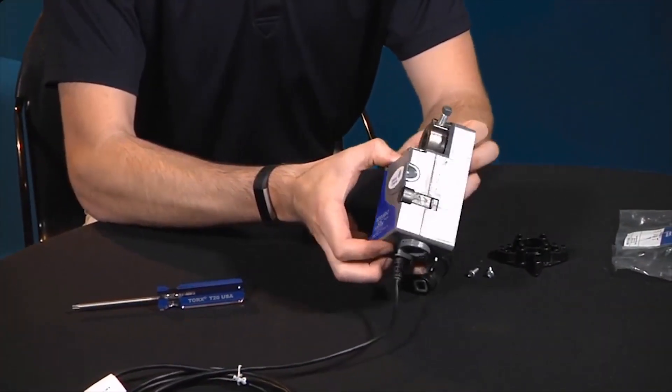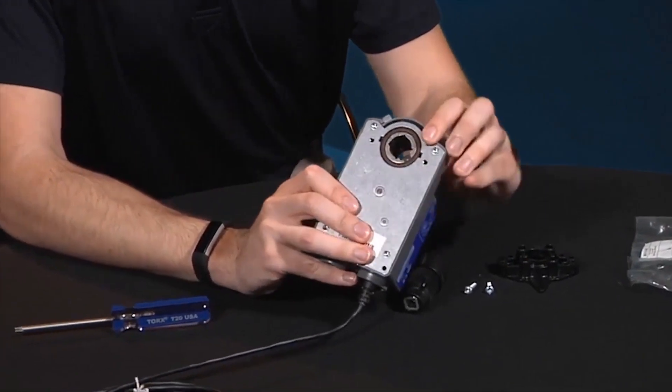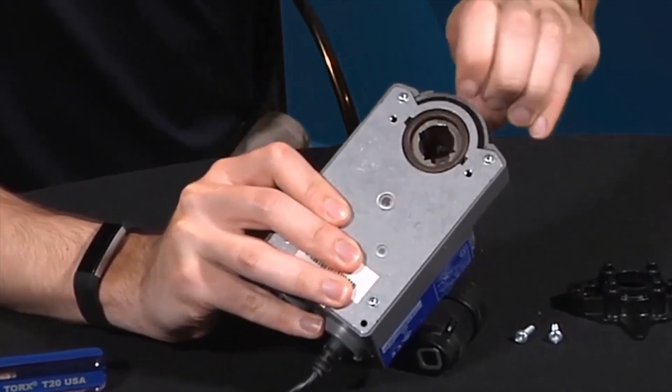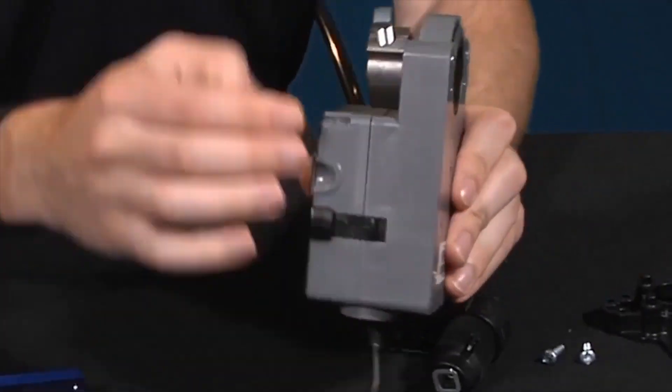The first step is to turn the actuator over and remove the coupler. To do this, you'll pull on the release tab and then pull the coupler out.